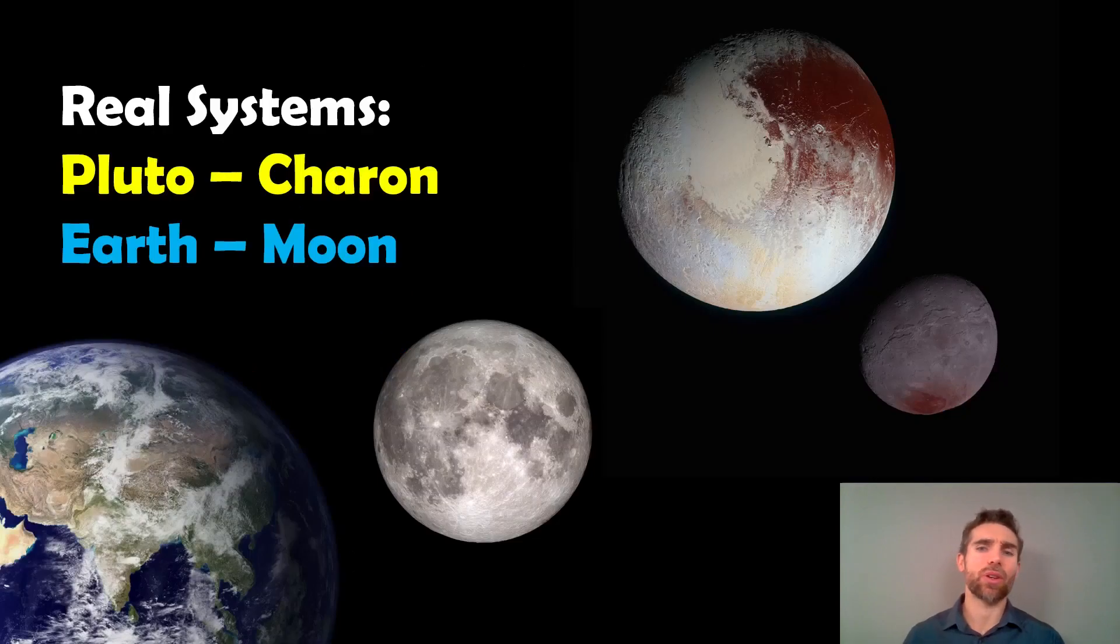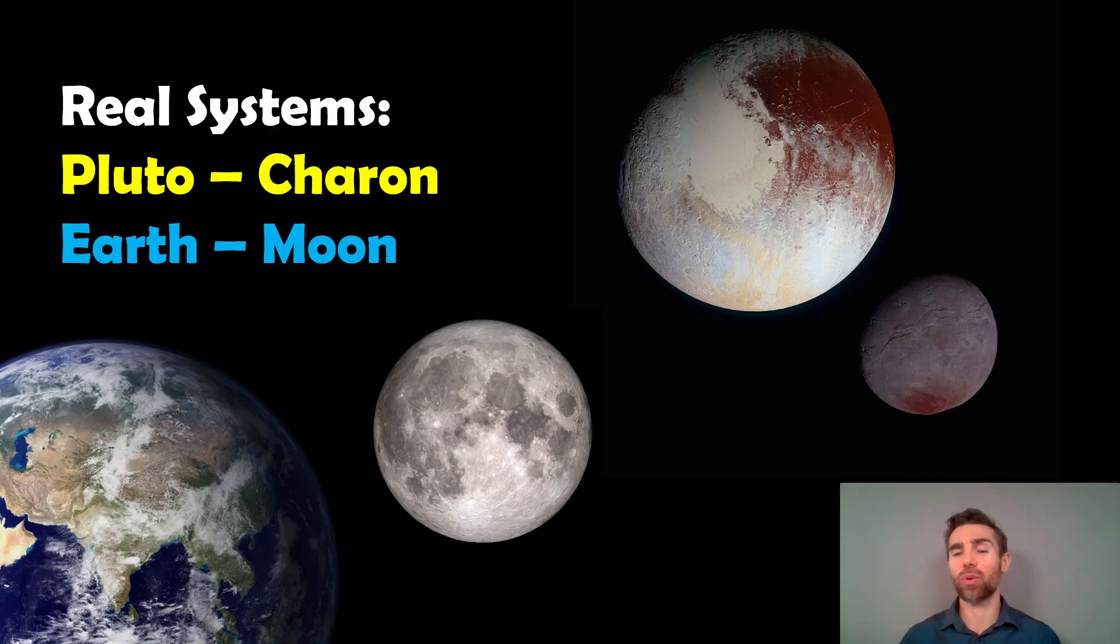So real systems in our solar system that come close to being a double planet is Pluto and Charon, which is its moon, and the Earth-Moon system as well. They're not quite one-to-one ratios, but they are close enough that the common center of mass is in between the two, and it would cause a wobble, but the larger of the two would still take an orbit. It wouldn't just stay there as the smaller one orbits around. So those are close to being double planets, although the Pluto system wouldn't be a planet. It would be a double dwarf planet.